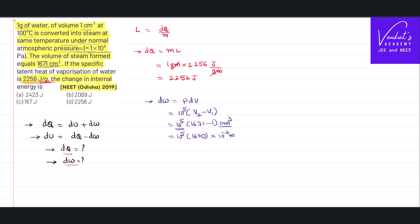1 centimeter is 10⁻² meter whole cube. So this is 10⁵, 1670 × 10⁻⁶. So this is 167 joules. I have converted this also.